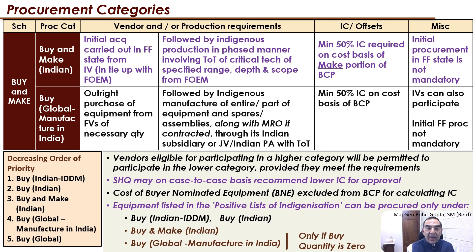BUY Global Manufacture in India implies the outright purchase of equipment from a foreign vendor in the necessary quantity. Distinct from BUY Global, it is followed by indigenous manufacture of the entire or part of the equipment, spares, and assemblies along with maintenance, repair and overhaul if contracted. This is done through the Indian subsidiary, joint venture, or appointed Indian production agency by the MOD from the OEM, with transfer of technology. Minimum 50 percent indigenous content on cost basis is to be achieved. An Indian vendor can participate and initial fully formed procurement is not mandatory.